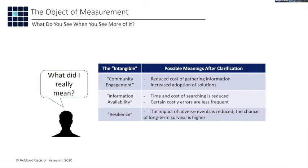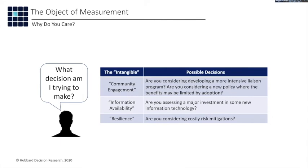What decision are we trying to make with each of these? Community engagement: are you considering a new policy where benefits may be limited by adoption, or developing a more intensive liaison program? For information availability: are you assessing a major investment in some new information technology? Resilience: are you considering a costly risk mitigation of some sort? Be explicit about the decision you're trying to support, and we can model that decision. The way we model uncertainties about those decisions is with Monte Carlo simulation, and we can throw computing power at it to run more scenarios to get higher resolution understandings of our risk.